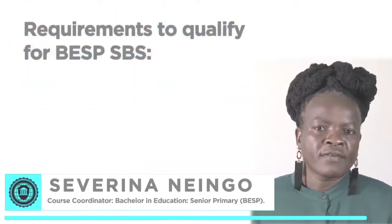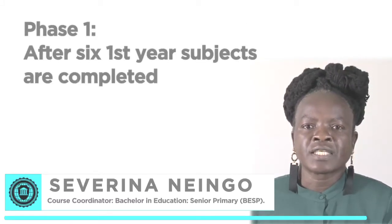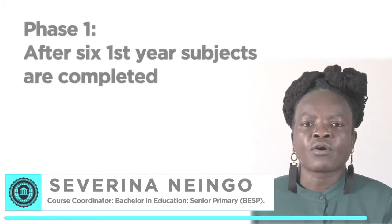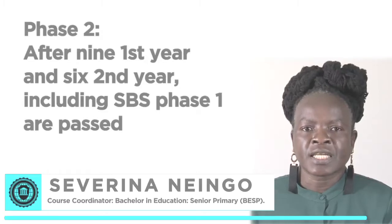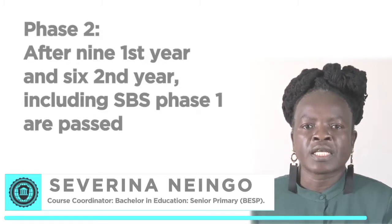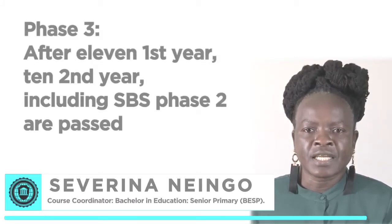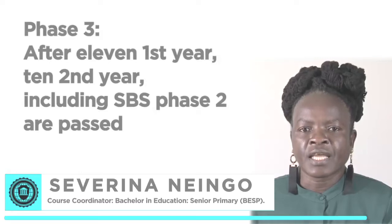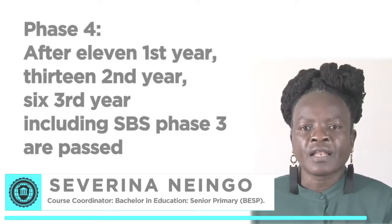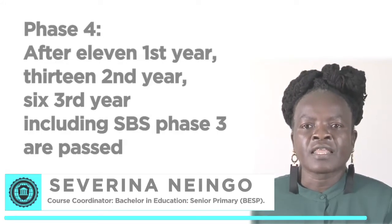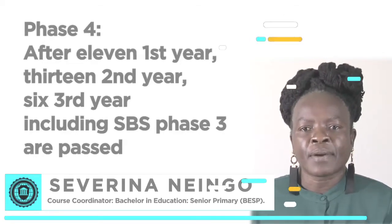Requirements to qualify for BASP school-based study: Phase one, after six first year subjects are completed. Phase two, after nine first year and six second year subjects including SPS phase one are passed. Phase three, after eleven first year and ten second year subjects including SPS phase two are passed. Phase four, after eleven first year, thirteen second year, and six third year subjects including SPS phase three are passed.